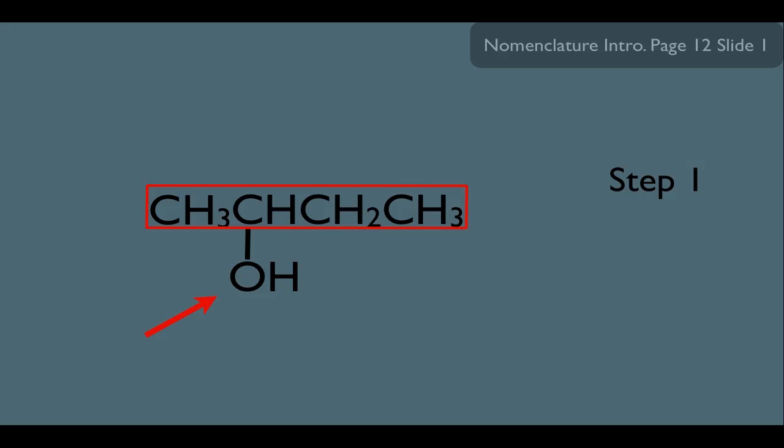And of course, for this case, that would be this chain right here. Now, notice we have four carbons in the box. So four carbons means bute.